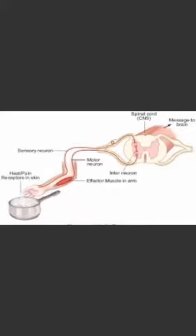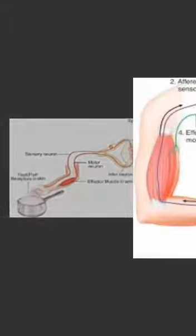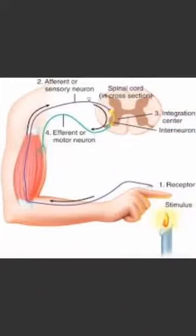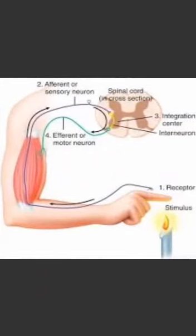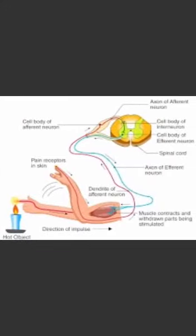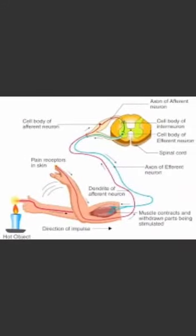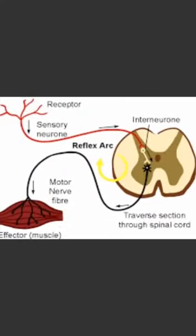The sensory neuron transmits or conveys the message to the spinal cord. The spinal cord interprets the stimulus, and the impulse is passed on to the relay neuron, which in turn transmits it to the motor neuron. Motor neurons carry the command from our spinal cord to our arms.